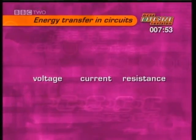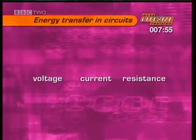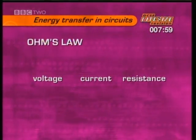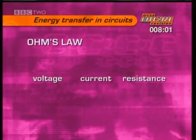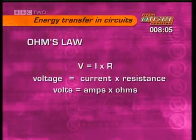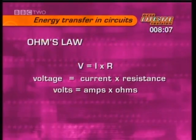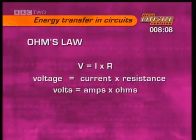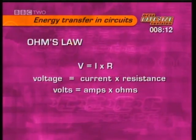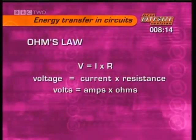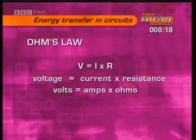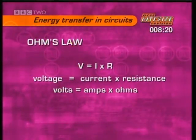There's a special relationship between the voltage, current and resistance in a circuit, called Ohm's law. Ohm's law says that anywhere in a circuit, V equals I times R, where V is the voltage across a component in volts, I is the current going through the component in amps, and R is the resistance of the component in ohms. If you know any two of these values, you can work out the other one.